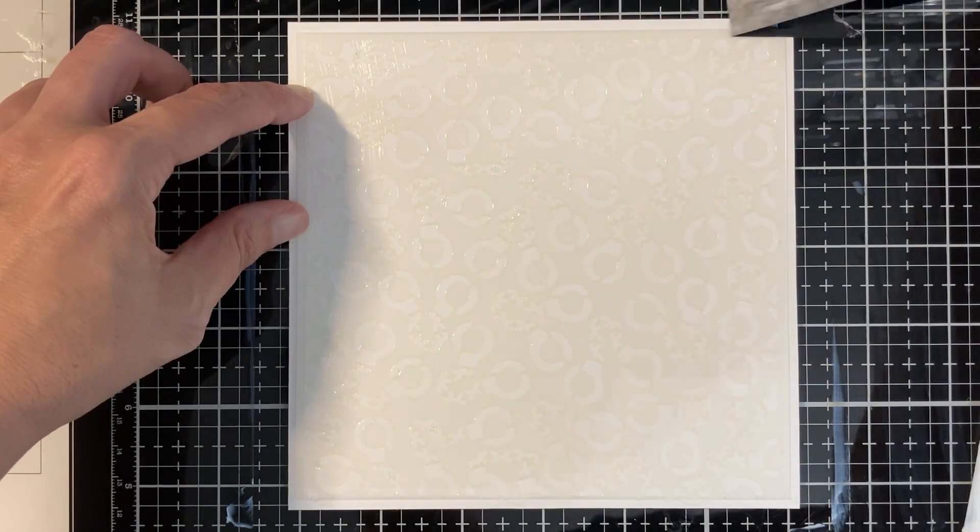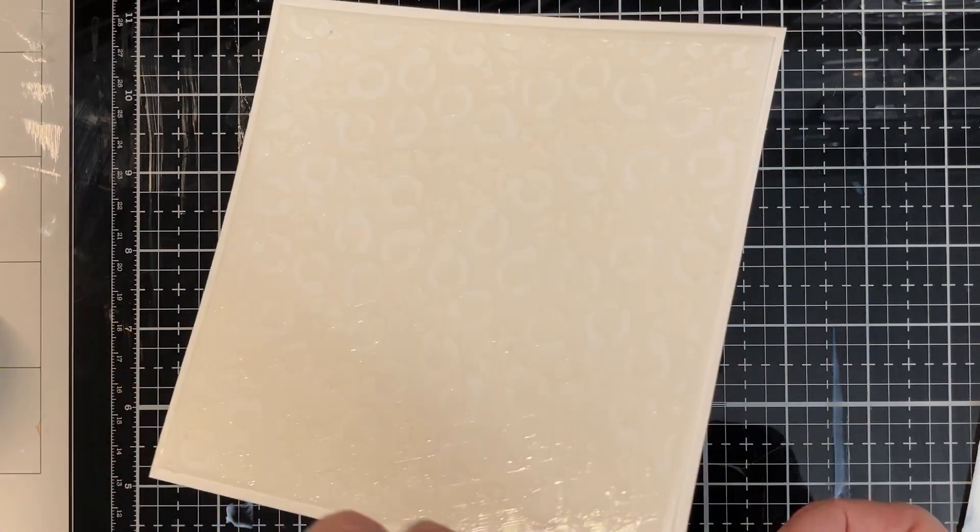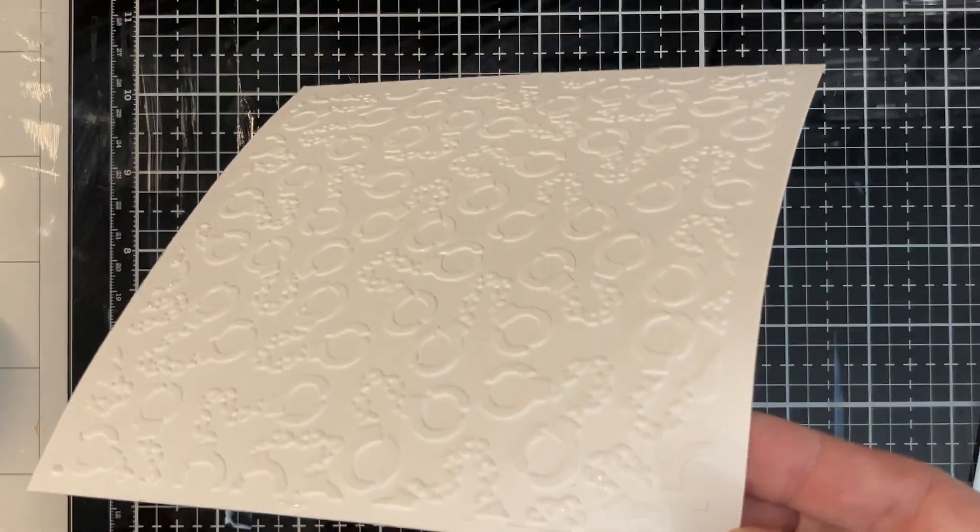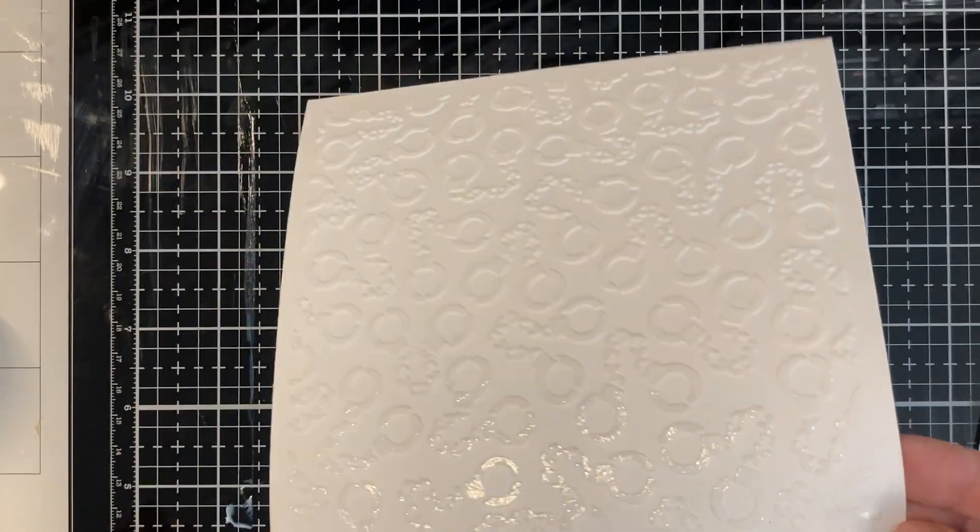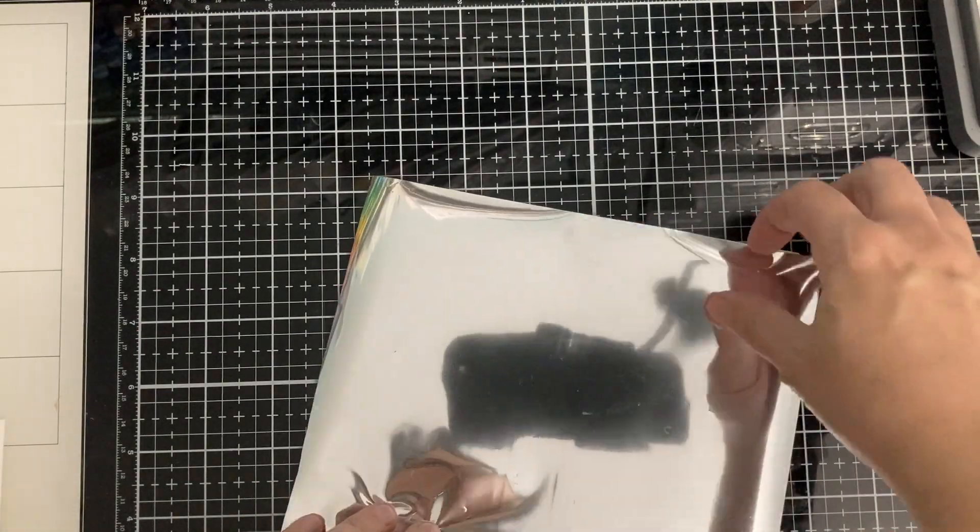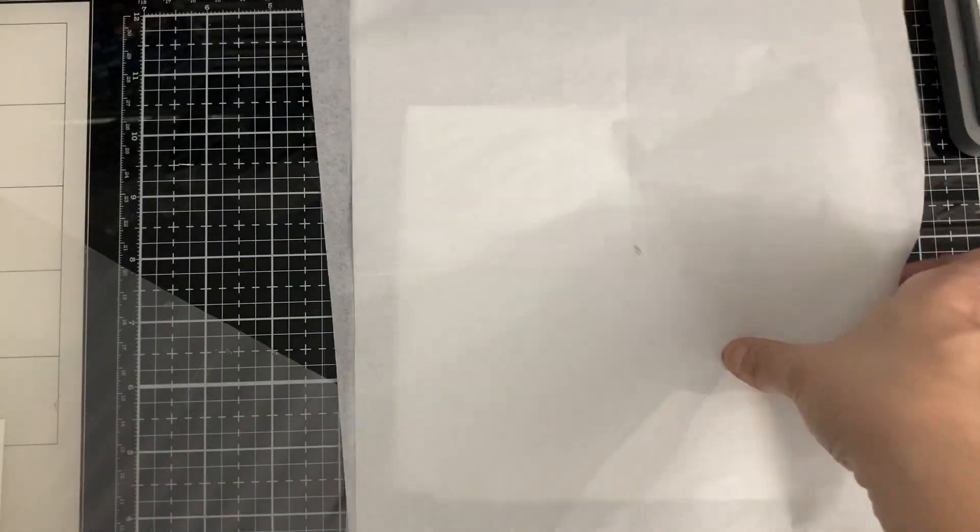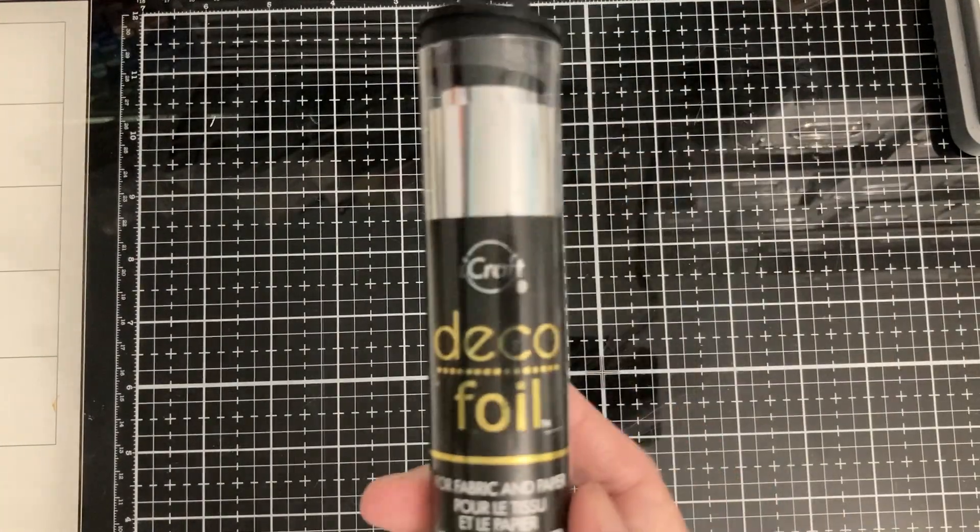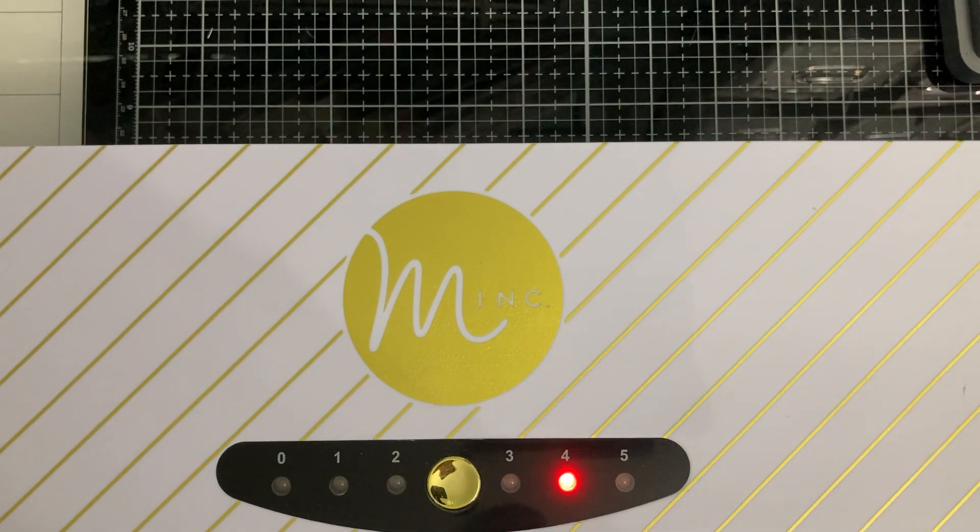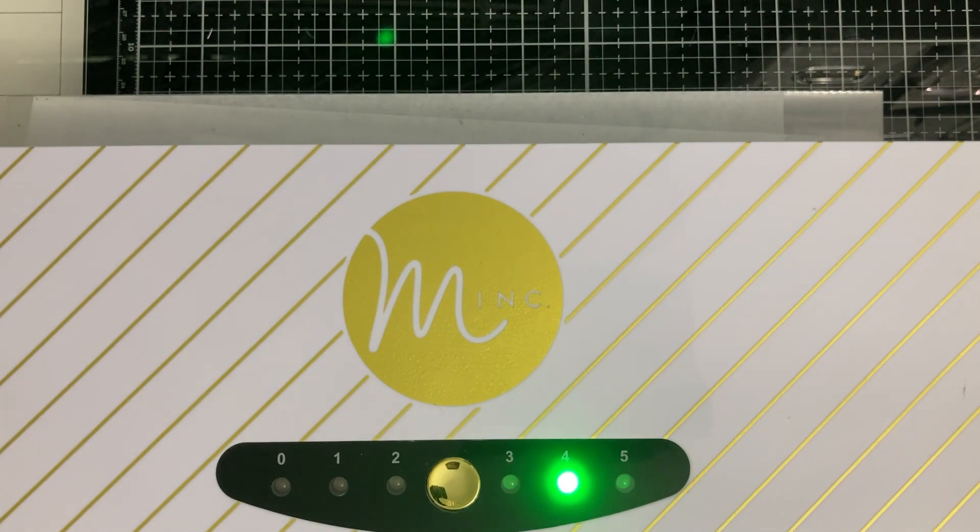I'm just gonna peel that off and be really gentle so you're not sliding it sideways or anything. I'll set that aside. I left it for about two hours and you have to have the pretty side up with the foil. I'm just gonna sandwich that in my pocket and put it through. Here's my foil that I used, my Minc.